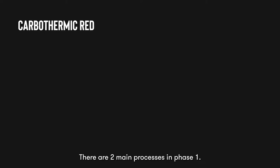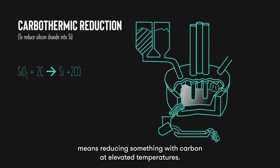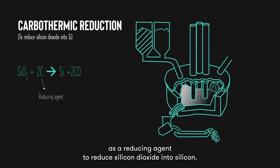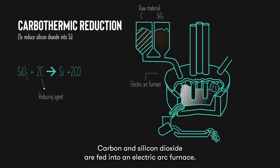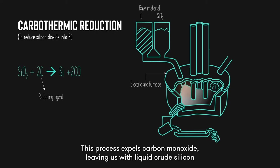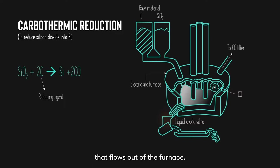There are two main processes in phase 1. First, we have carbothermic reduction, which means reducing something with carbon at elevated temperatures. In the process, carbon is introduced as a reducing agent to reduce silicon dioxide into silicon. Carbon and silicon dioxide are fed into an electric arc furnace, which heats them to about 1900 degrees Celsius. This process expels carbon monoxide, leaving us with liquid crude silicon that flows out of the furnace.